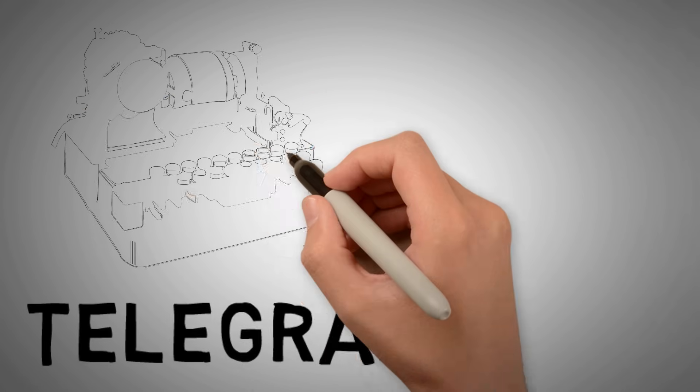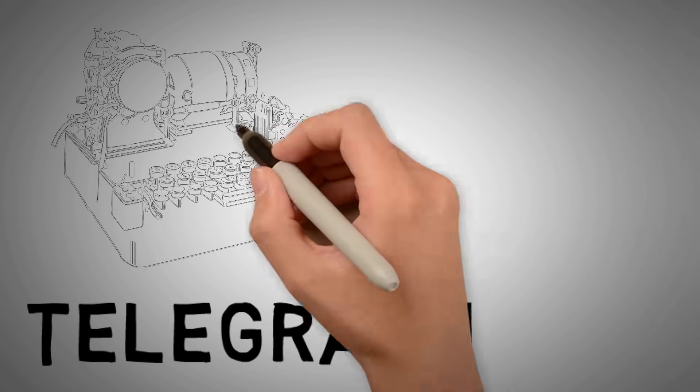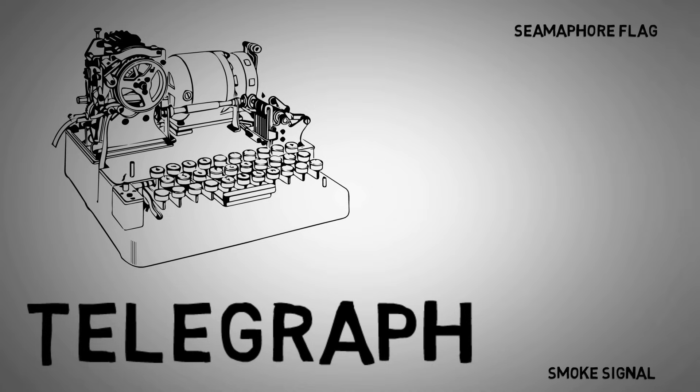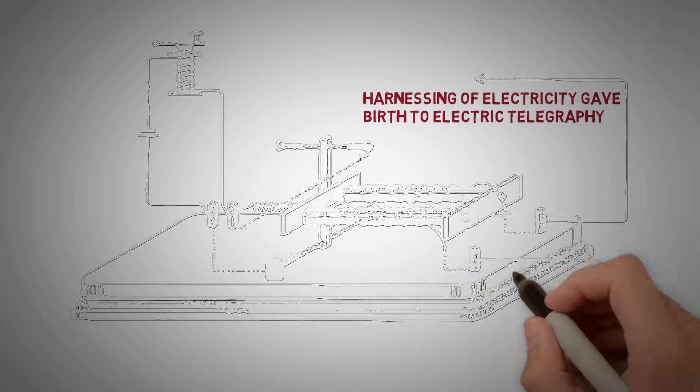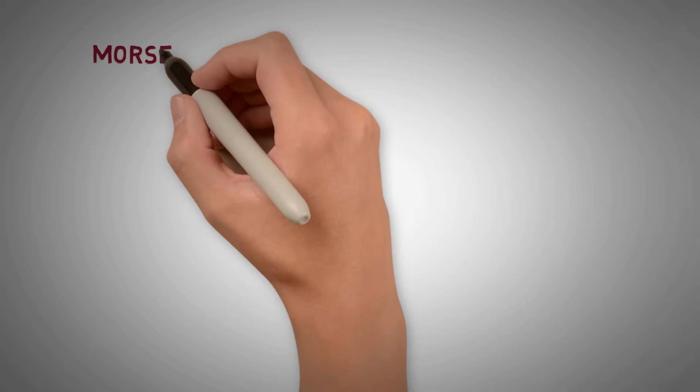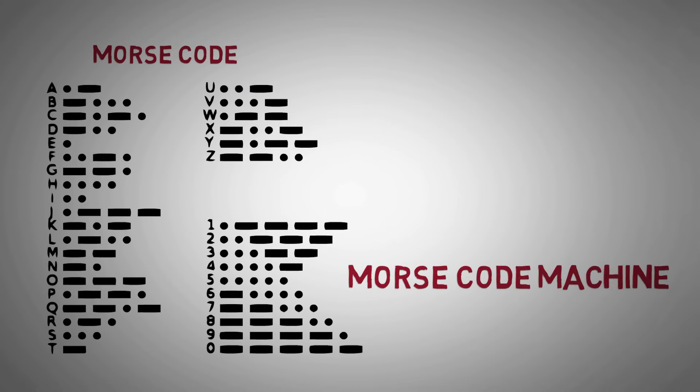Telegraph. Telegraphy was the greatest breakthrough in the field of communication. Although the smoke signal and semaphore flags were different forms of telegraphy, the harnessing of electricity in the late 19th century gave birth to electric telegraphy. Morse code is still used globally as a mode of communication.